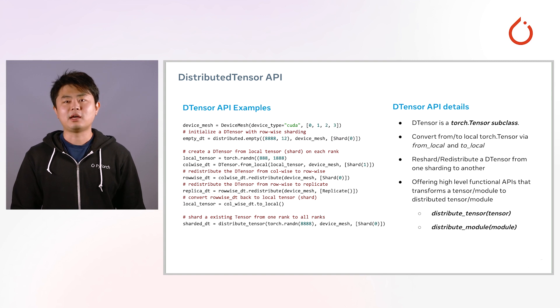Given the D-tensor concepts, now let's look at the D-tensor API. D-tensor is fundamentally a PyTorch tensor subclass, and it really looks like a normal tensor, except that it is distributed across devices. With a device mesh, we can create a D-tensor with row-wise sharding and column-wise sharding.